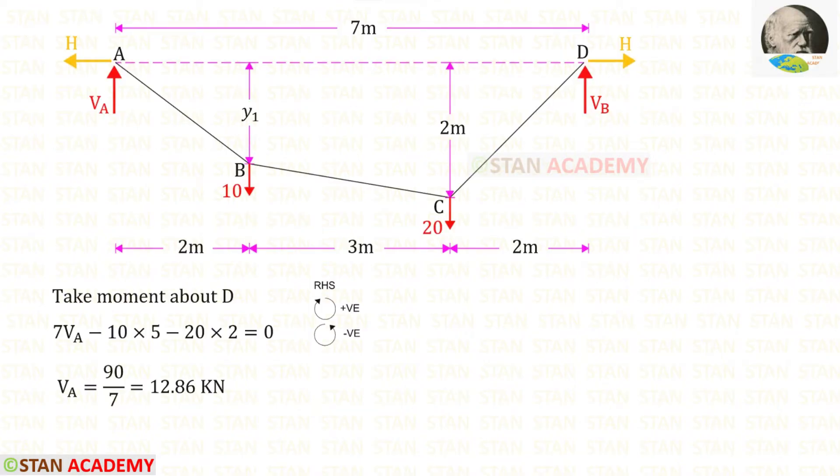Now we are going to find the vertical reactions. First I am going to find VA. For that I am going to take moment about D. VA is acting in the clockwise direction so it will be positive and the distance is 7, so 7VA. This load is acting in the anti-clockwise direction so it is negative. For this load the distance is 2.